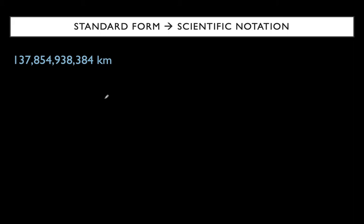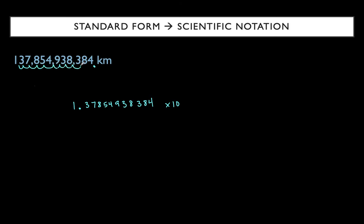We have 137,854,938,384 kilometers — that is a gigantic number. But the rules remain the same. I write it between 1 and 10: 1.37854938384 times 10, not chopping any digits off. Our original number is so much larger than what I've written, so we have a positive exponent. Counting how many times I moved the decimal: 1, 2, 3, 4, 5, 6, 7, 8, 9, 10, 11 times. So the answer is 1.37854938384 × 10¹¹ kilometers.